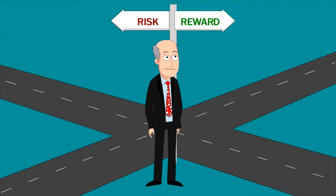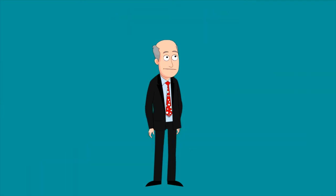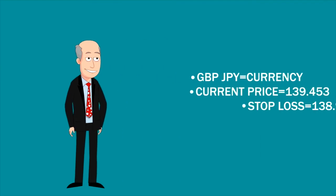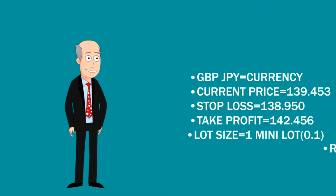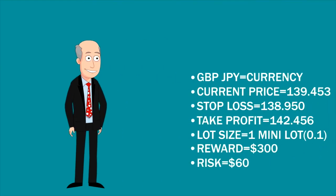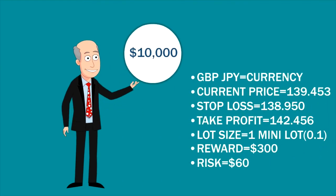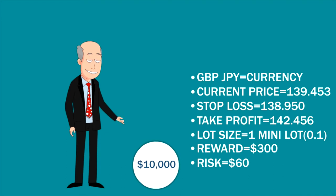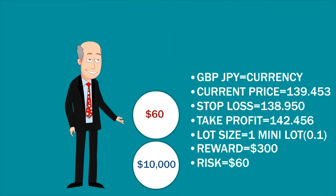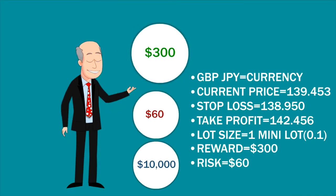The next step is to calculate the risk and reward, making sure that proper equity management is followed to minimise risk and maximise reward. In this example, if we were to use a mini lot — the maximum recommended amount for a $10,000 trading account — we would be risking $60 to make a reward of $300.